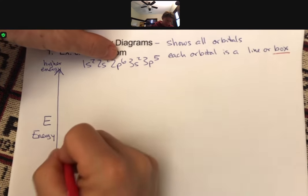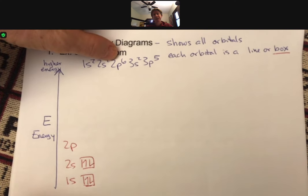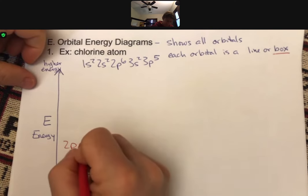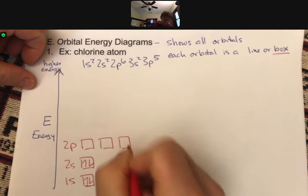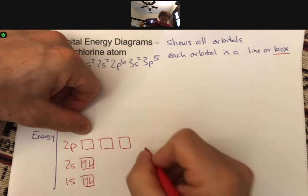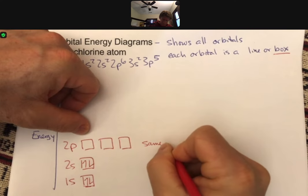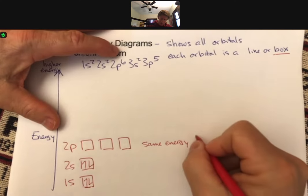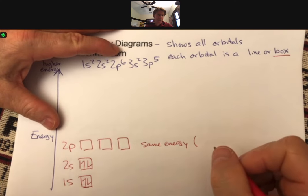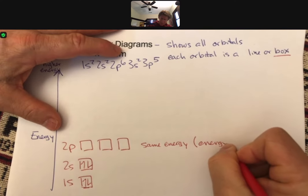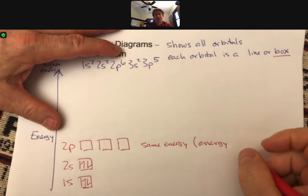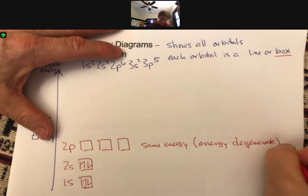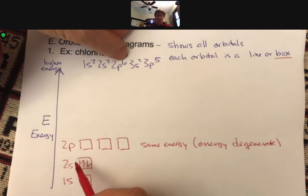Next, we go to 2p. And we've said this before, but now we really get into what it means. 2p has three orbitals, and all three of these orbitals are at the same energy. And they're also called, and you might see this in a future class, they might be called energy degenerate, which is another way of saying same energy.